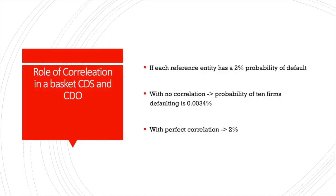Suppose each reference entity has a 2% probability of default. With no correlation, the probability of 10 firms defaulting is 0.0034%. With perfect correlation, it would be 2% — meaning if one firm defaults, every other firm defaults. This illustrates the magic of diversification in a CDO: if we diversify the entities in the CDO, we can lower the risk exponentially.